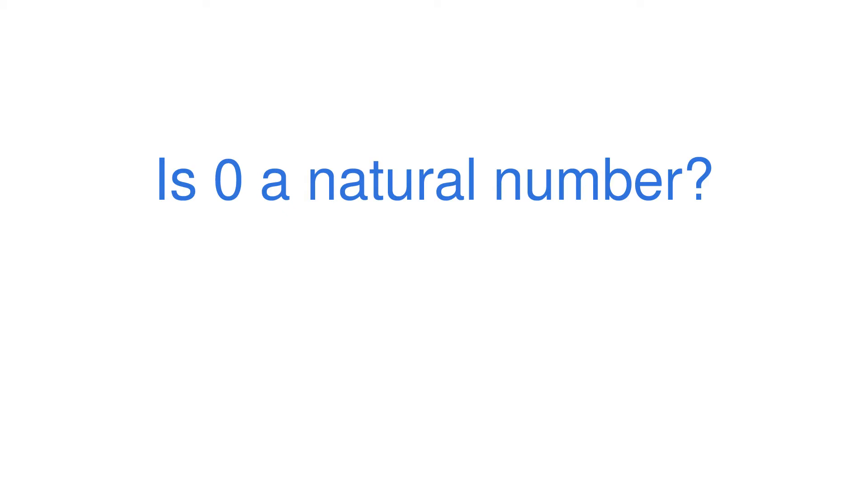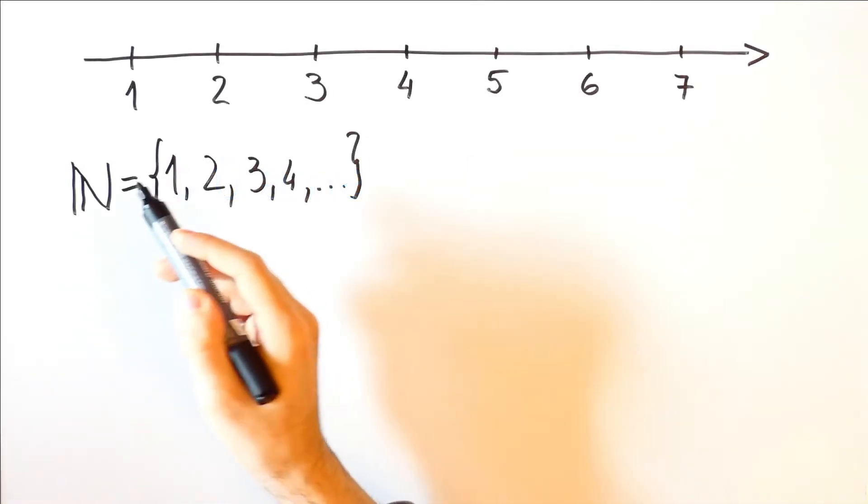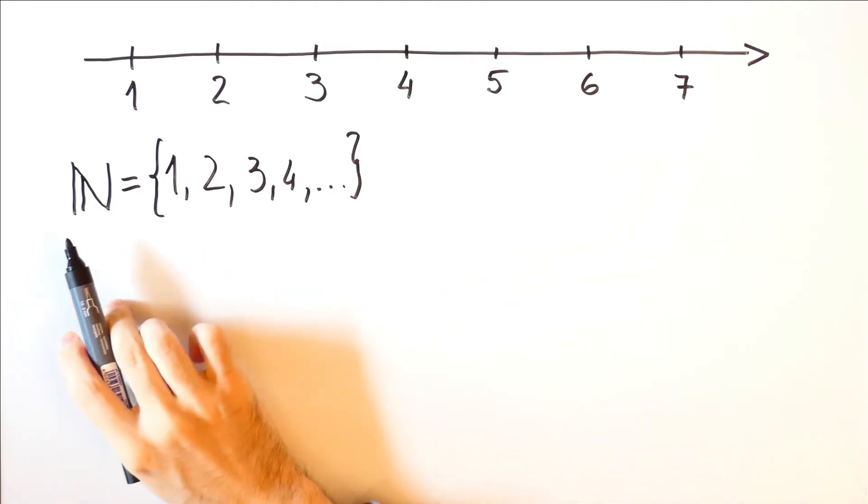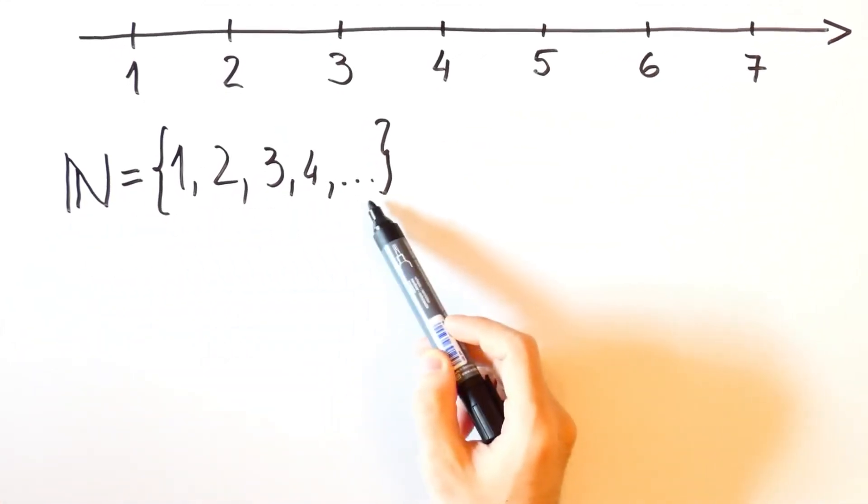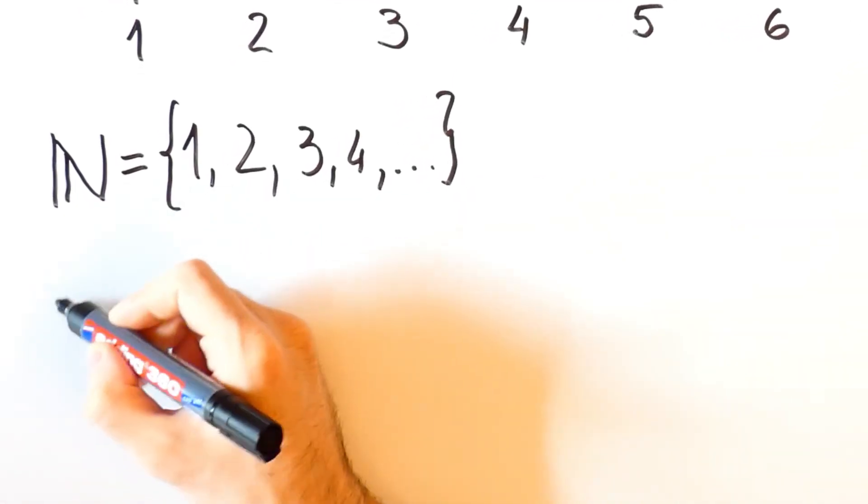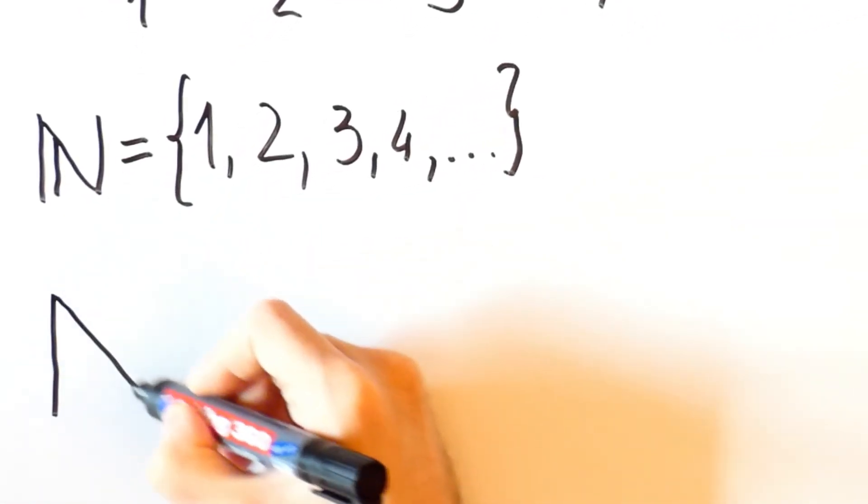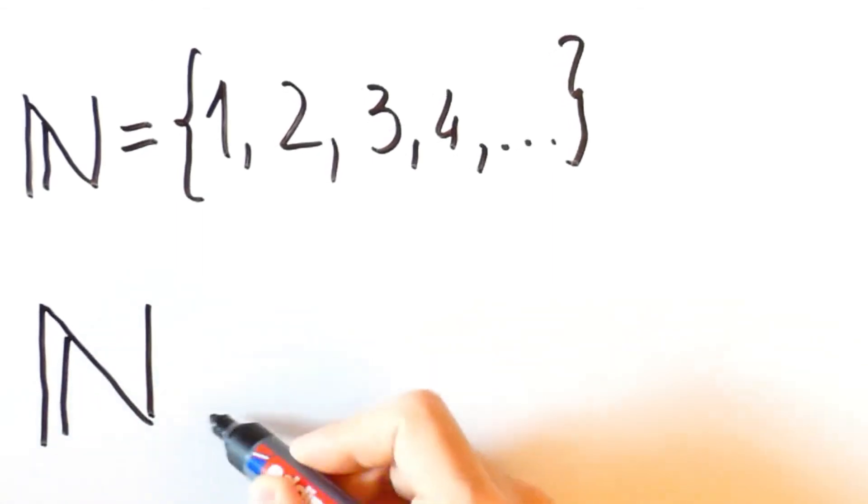What about 0? Is 0 a natural number? Well, sometimes 0 is considered a natural number and sometimes it isn't. We will distinguish between the set of natural numbers without 0 and the set of natural numbers with 0 by putting 0 in the subscript.